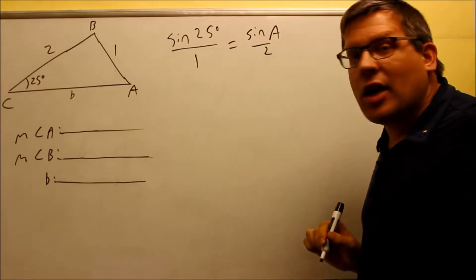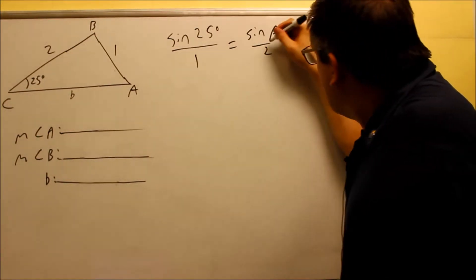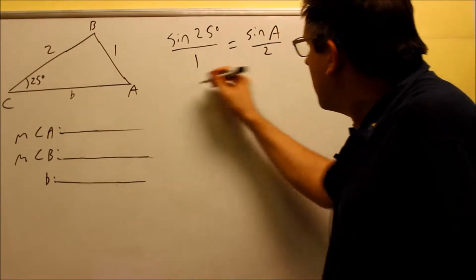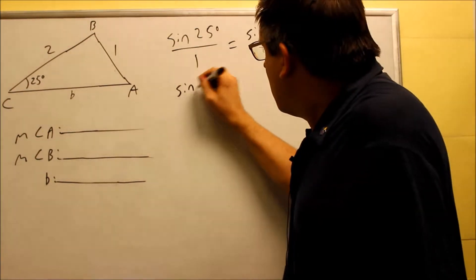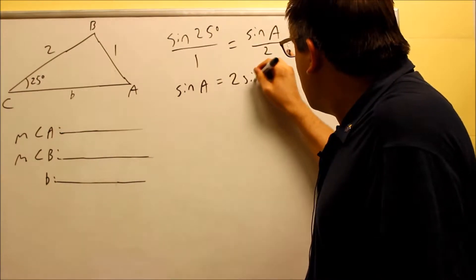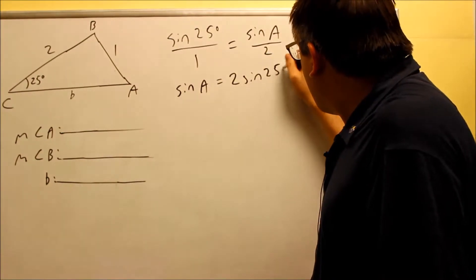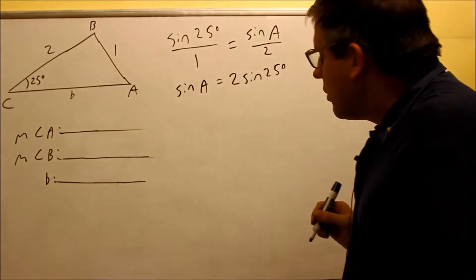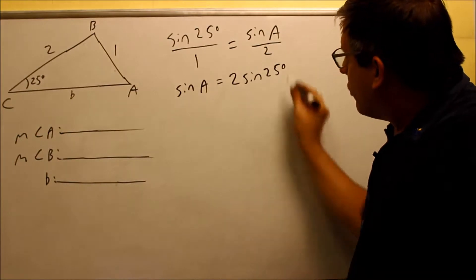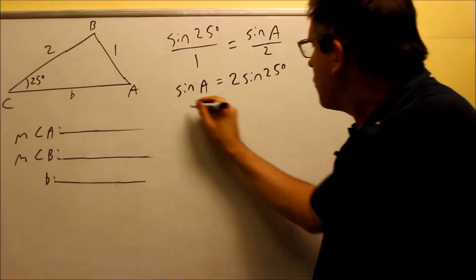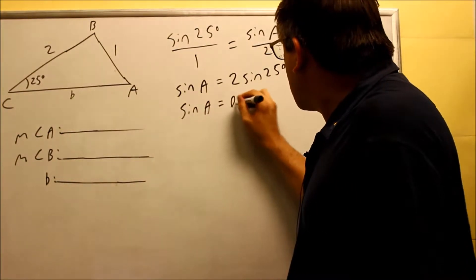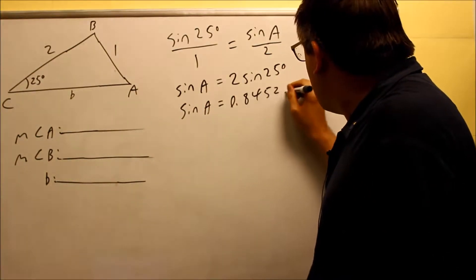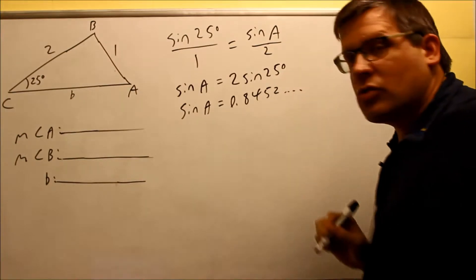We're going to do sine of A over 2. Next, we're going to cross-multiply: sine of A equals 2 times sine of 25. If we compute 2 sine 25, we get sine A equals 0.8452.